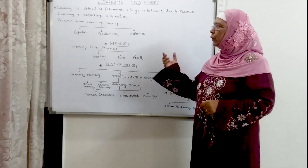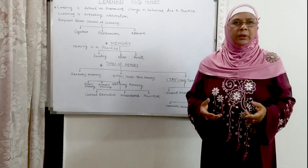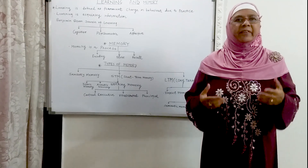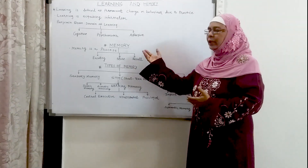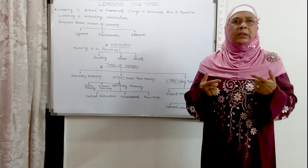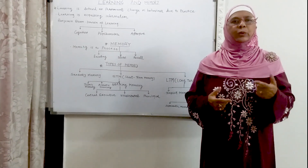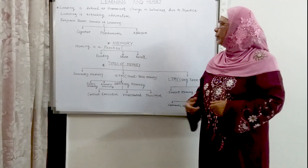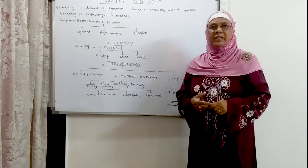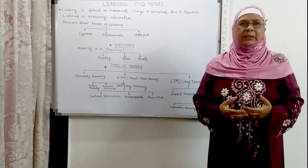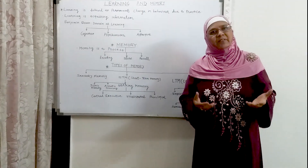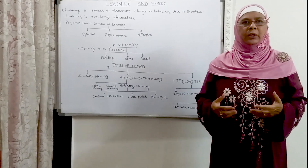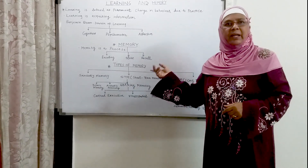The first one is the cognitive domain of learning. What is cognitive? Cognitive is learning, remembering, recalling, and retrieving the information. What is psychomotor? Psychomotor is learning to swim, learning to dance, learning to drive a bicycle, driving a car, etc. What is the affective aspect of learning? When we do these activities, either we like this activity, we love this activity, or maybe sometimes we hate this activity. Our feeling towards our learning is the affective aspect of learning.